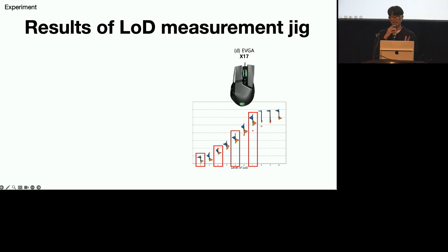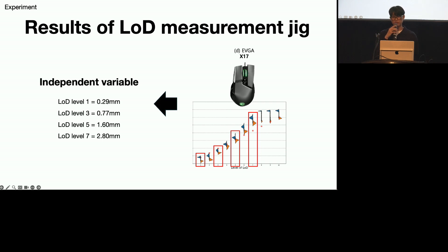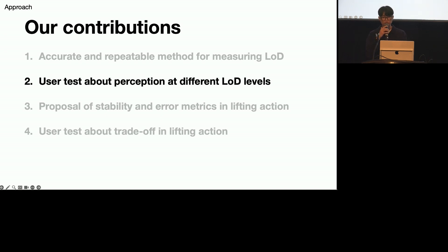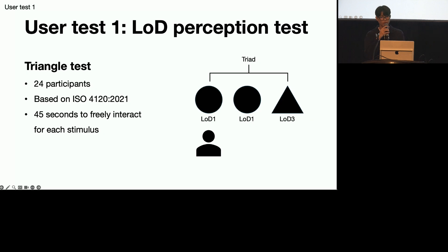Among the 10 LOD levels in the X17, we used four of them as independent variables for the user tests. After finding the appropriate mouse, we ran two user tests. The first was a psychological test to measure the ability of users to discriminate between different levels of LOD.